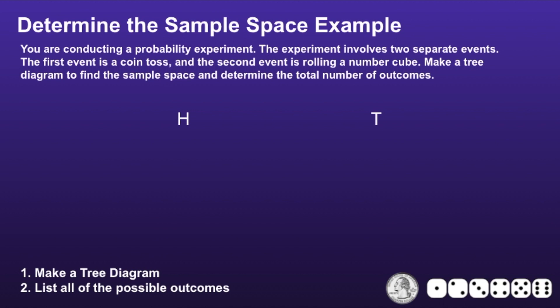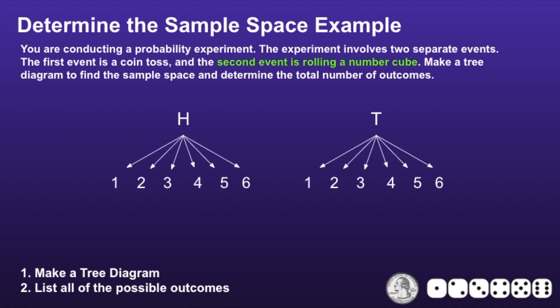We'll use H for heads and T for tails. The second event is rolling a number cube, and as you can see at the bottom right of the screen, there are six possible outcomes when rolling a number cube. So what we want to do is draw six arrows from both the H and the T, and at the bottom of these arrows are all six of those possible outcomes.